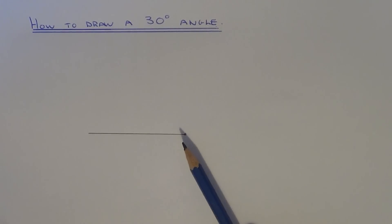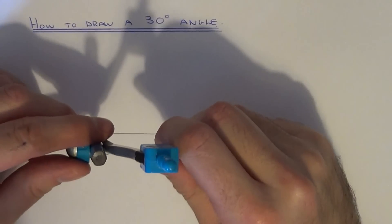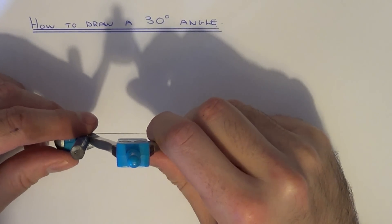To begin with, you'll have to draw a 60 degree angle and then what we're going to do is halve the 60 degree angle to give you the 30 degree angle.